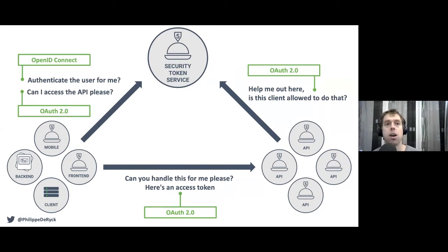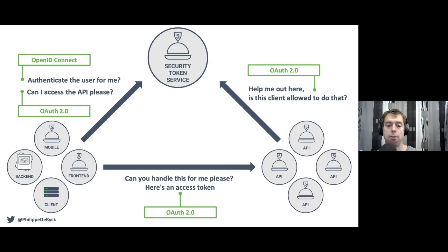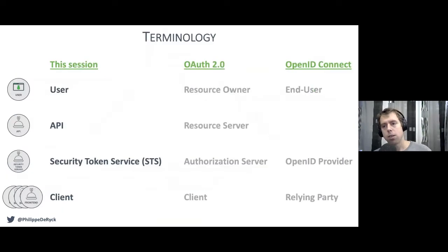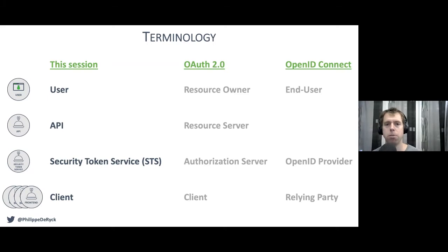In a quick summary: OpenID Connect is about authenticating the user to a client — giving the client information about the user. OAuth is about a client accessing an API or another resource with an access token. Today we'll mainly talk about how the client obtains a token, how it accesses APIs, and some token security challenges in front-end web applications. Note that OAuth specs and OpenID Connect specs use different terms for the same things — for example, the user is called 'resource owner' in OAuth but 'end user' in OIDC — so we'll use a common set of terminology throughout.